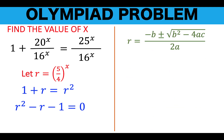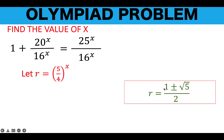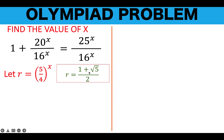We find that r equals 1 plus or minus the square root of 5, all over 2. But notice that r equals 5 over 4 raised to x, which is a positive base raised to a variable exponent. No matter what the value of x, we cannot get a negative value for r. So we ignore the minus sign and accept r equals 1 plus the square root of 5, all over 2. From these two statements, we now have 5 over 4 all raised to x equals 1 plus the square root of 5 over 2.